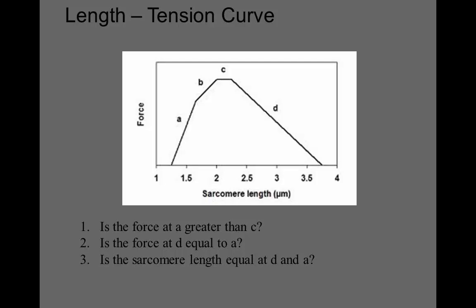So let's answer these questions. Number one, is the force at a greater than c? No, it's not. C, which is mid-range sarcomere length, is the max force production of that sarcomere. So this relationship is like an inverted U. Max at the middle, less force at shorter length, less force at longer length. Number two, is the force at D equal to the force at A? It is.